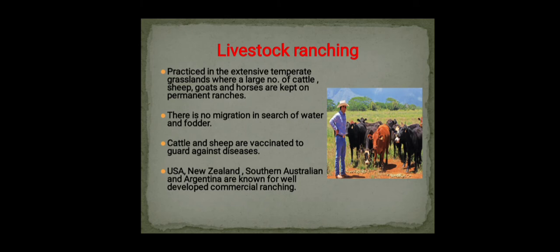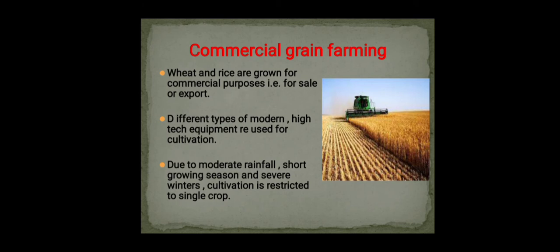Livestock ranching is practiced in extensive temperate grasslands where large numbers of cattle, sheep, goats, and horses are kept on permanent ranches. There is no migration in search of water and fodder. Cattle and sheep are vaccinated to guard against diseases. USA, New Zealand, southern Australia, and Argentina are known for well-developed commercial ranching, with ranches divided into large parcels fenced to regulate grazing.